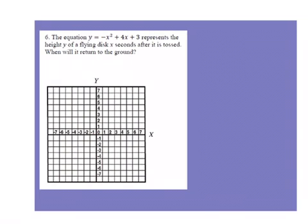So, for this example, they give me the equation y equals negative x squared plus 4x plus 3. And this represents the height y of a flying disc x seconds after it is tossed. It's asking me to find out when it's going to return to the ground.